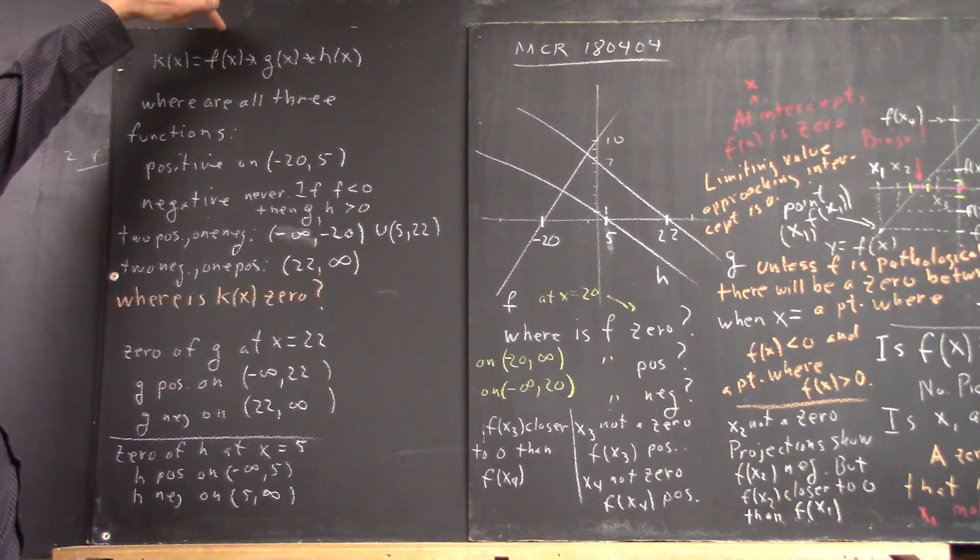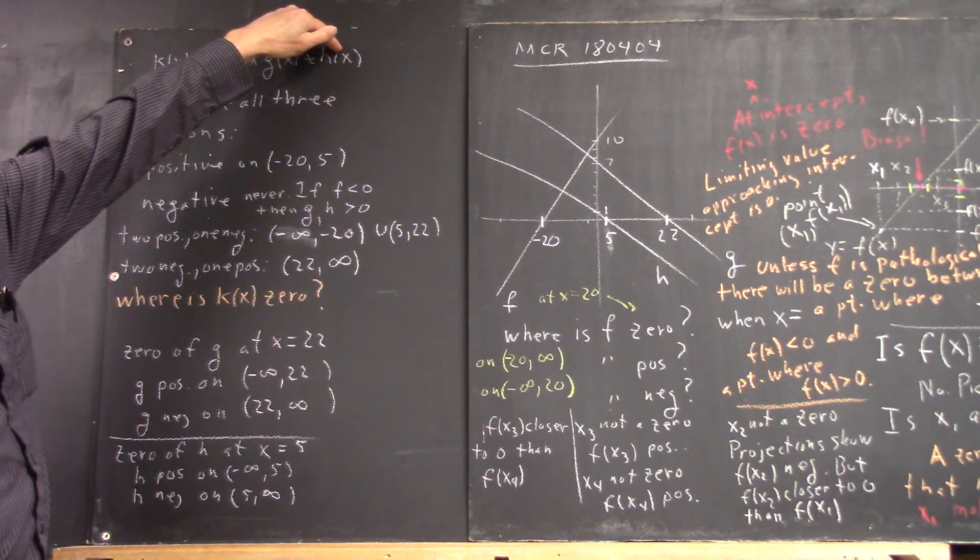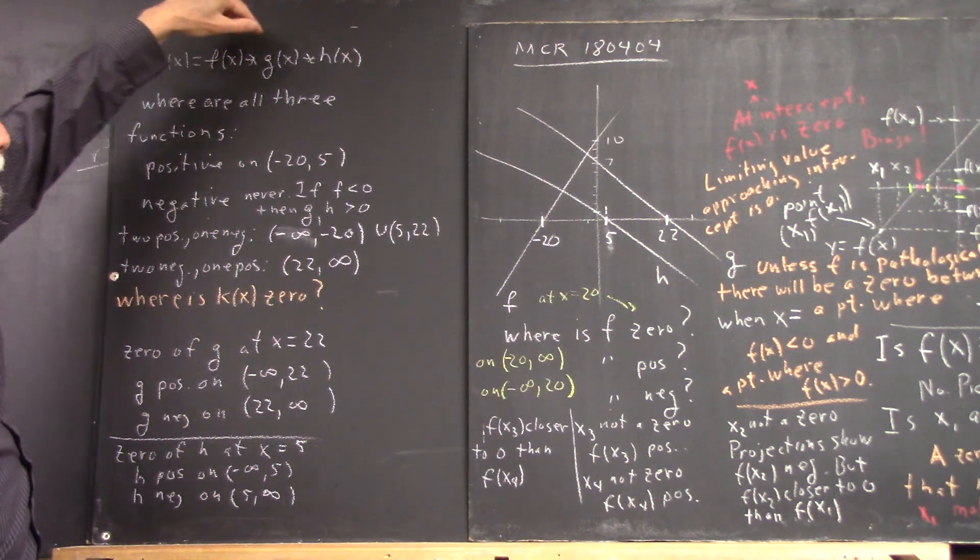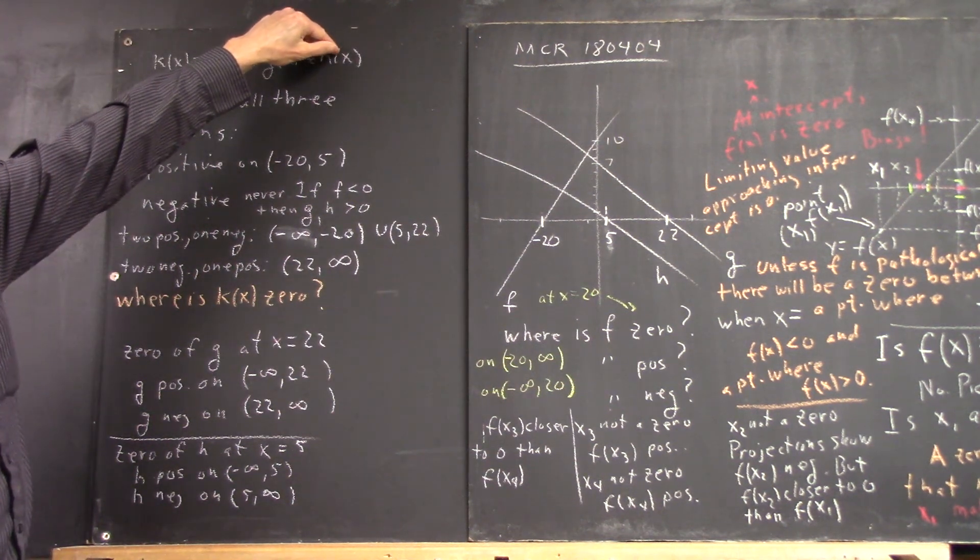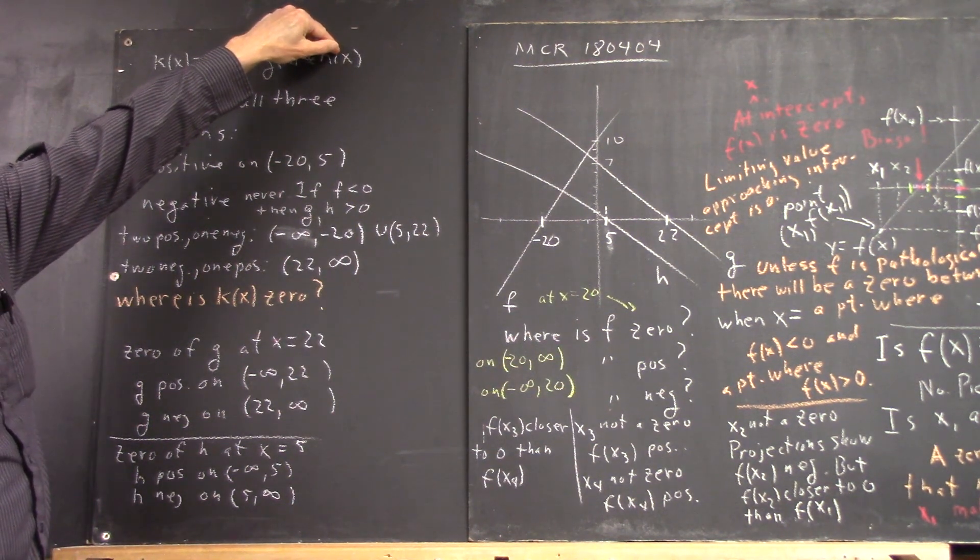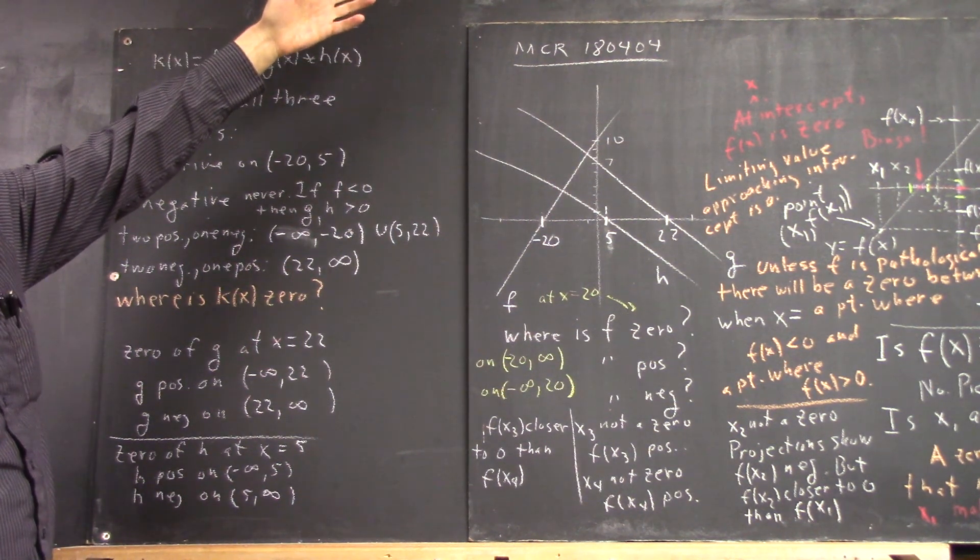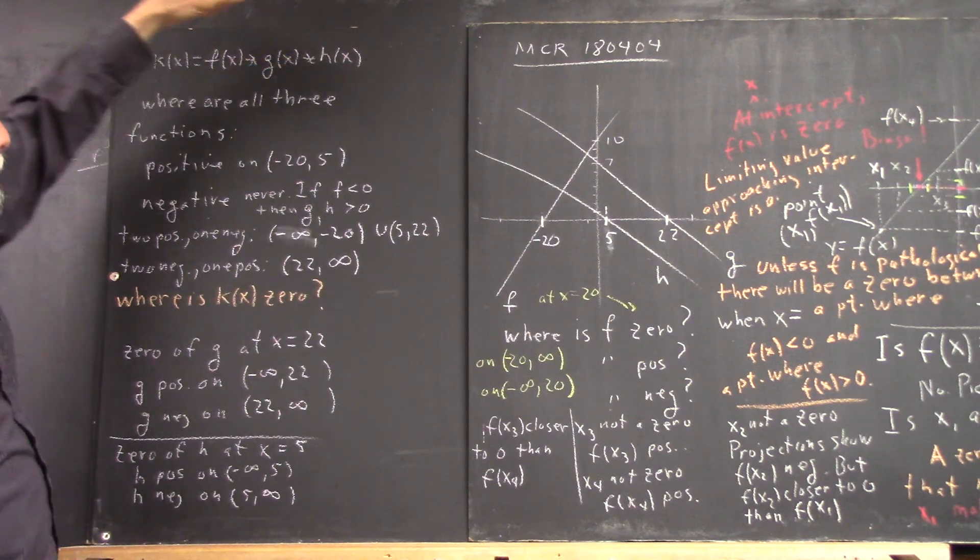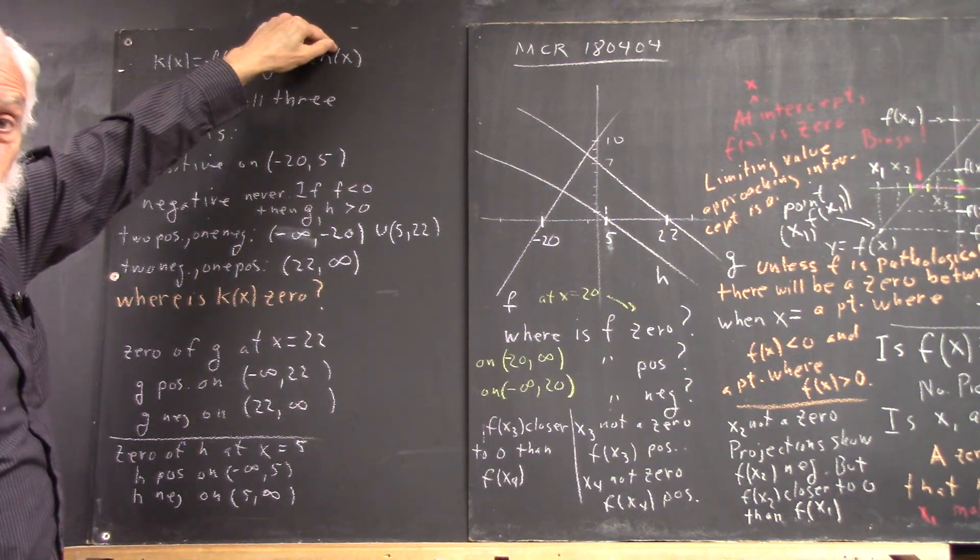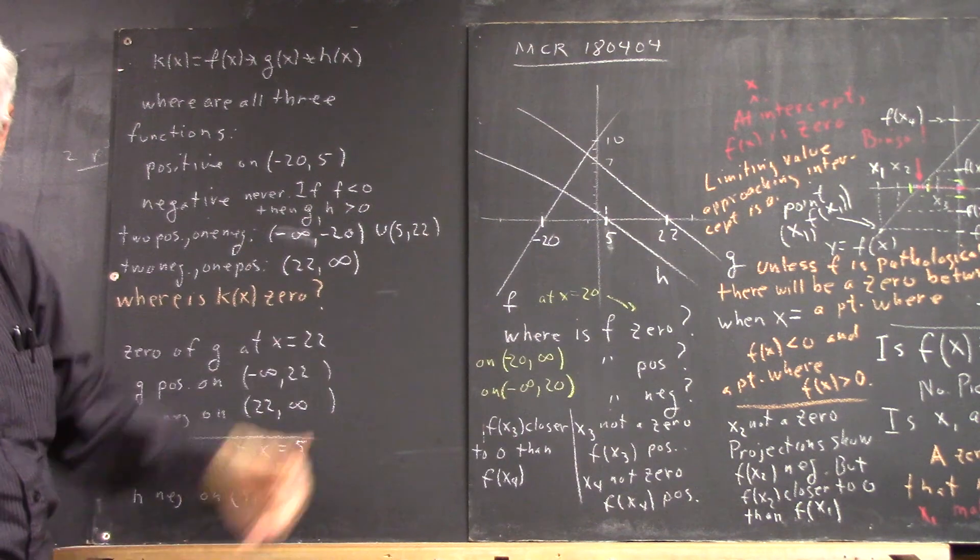Okay, k of x is this multiplied by this multiplied by this. How can a product of three numbers be zero? One of them has to be zero, right? At least one of them has to be zero. Maybe they're all zero, but if any one of them is zero, that is enough.